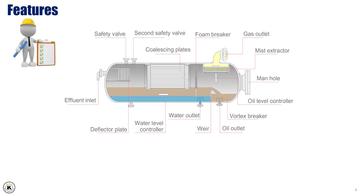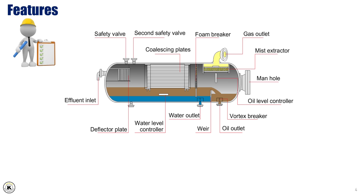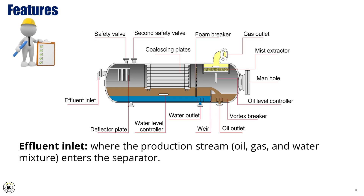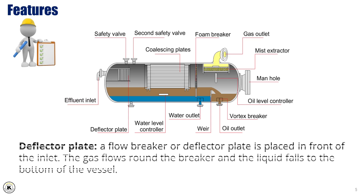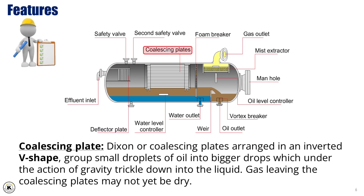Inside the separator, there are several pieces of equipment to help the process. The test separator is mainly composed of an effluent inlet, where the production stream — oil, gas, and water mixture — enters the separator. A flow breaker or deflector plate is placed in front of the inlet. The gas flows round the breaker, and the liquid falls to the bottom of the vessel. Coalescing plates arranged in an inverted V-shape group small droplets of oil into bigger drops, which under the action of gravity trickle down into the liquid.